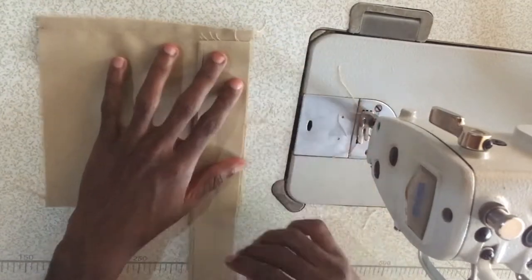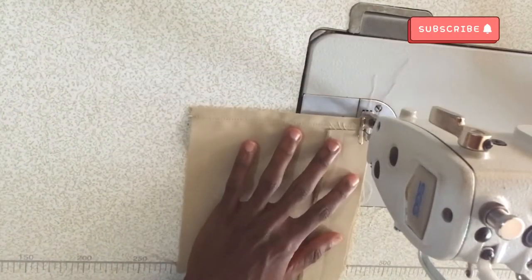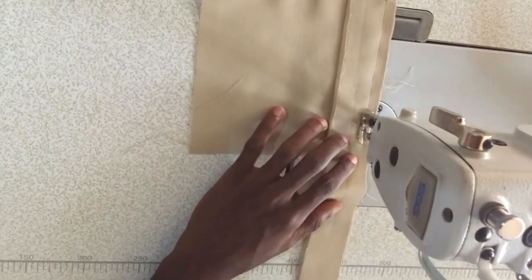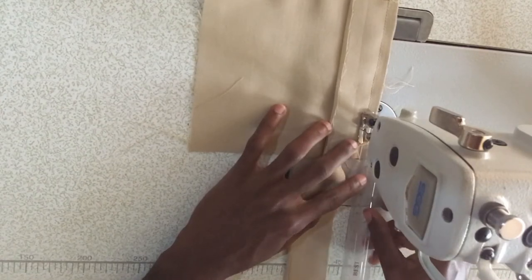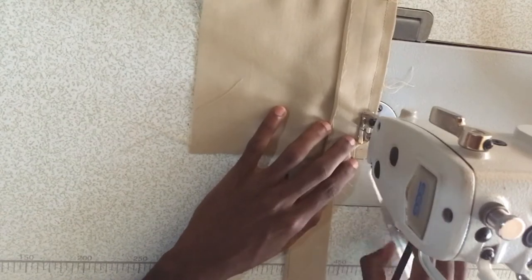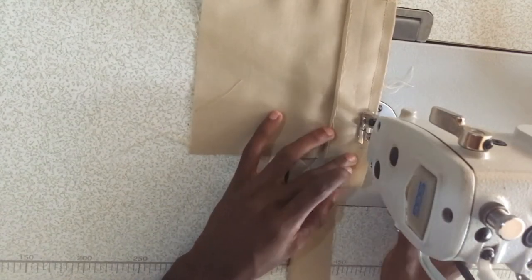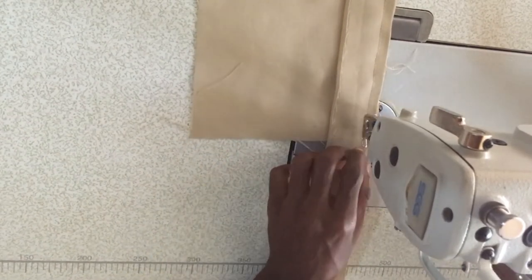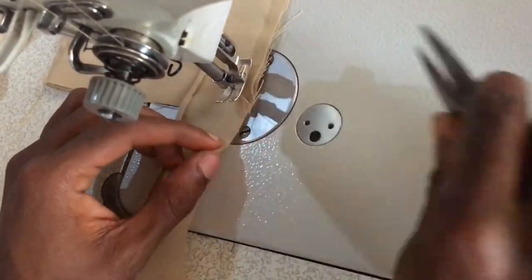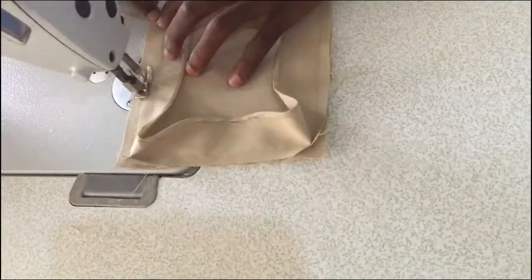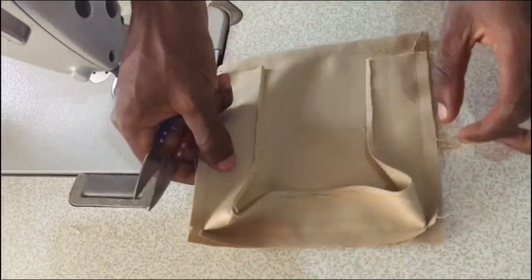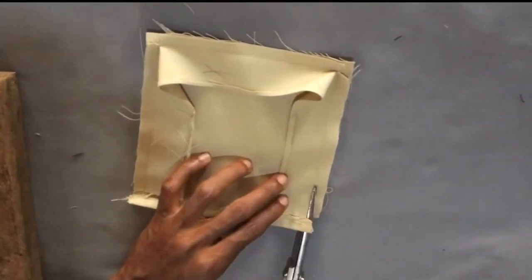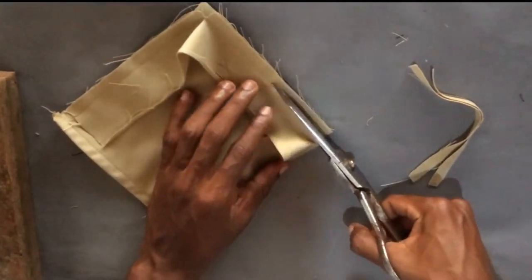With right sides facing each other, place the gusset on the pocket and stitch. Stop short 1cm to the pocket edge, clip and pivot. Trim down to about half or quarter of the allowance. This allowance will be enclosed in a seam.